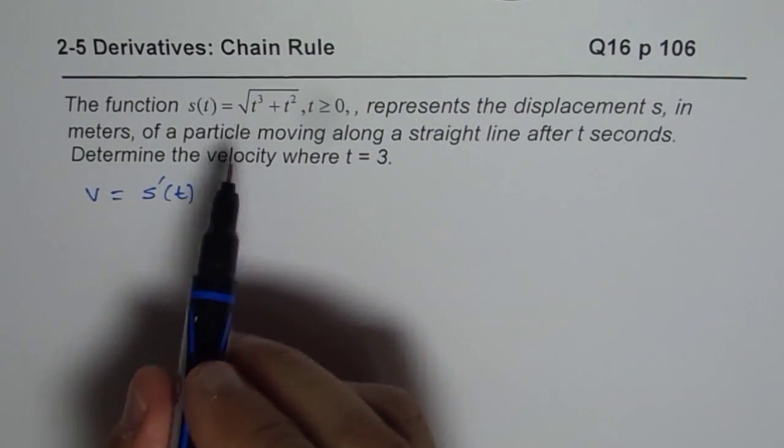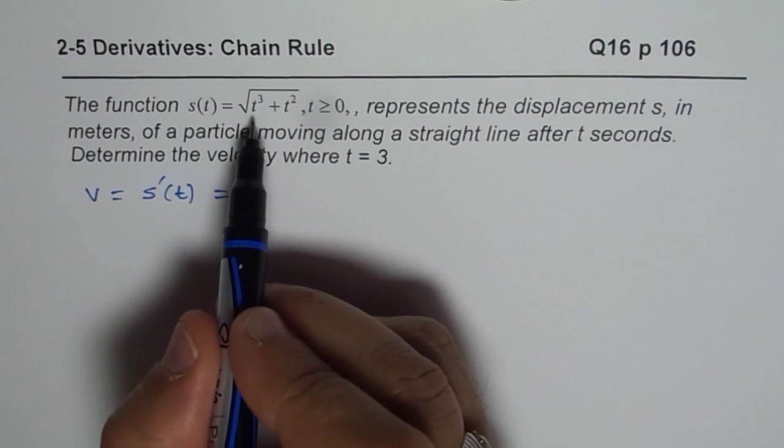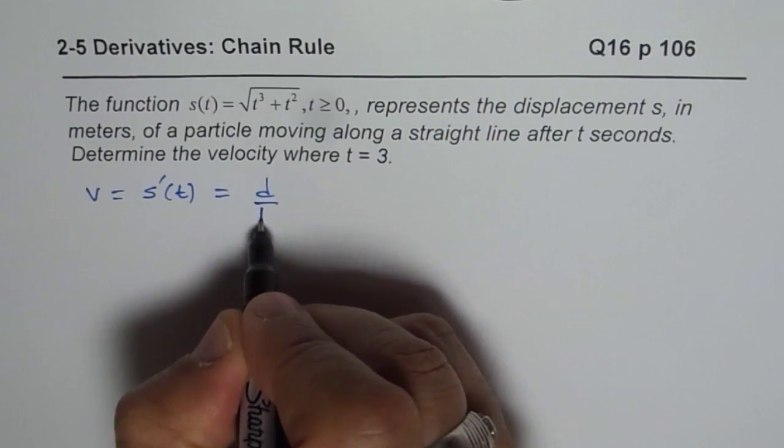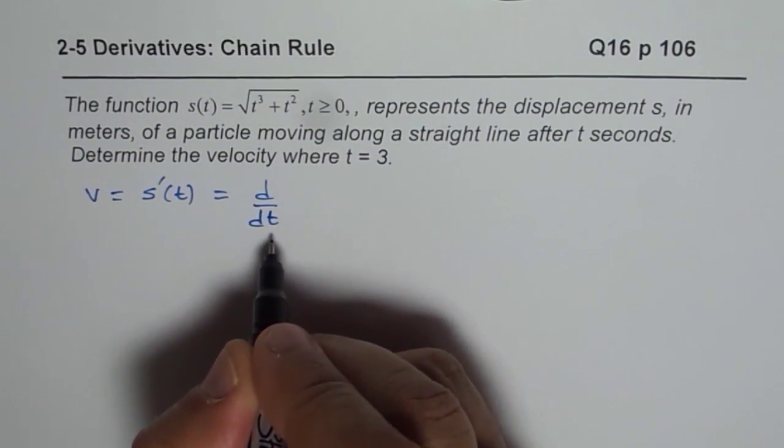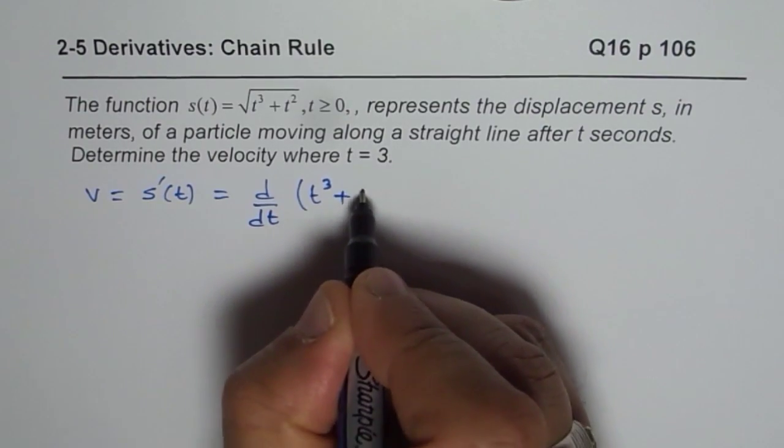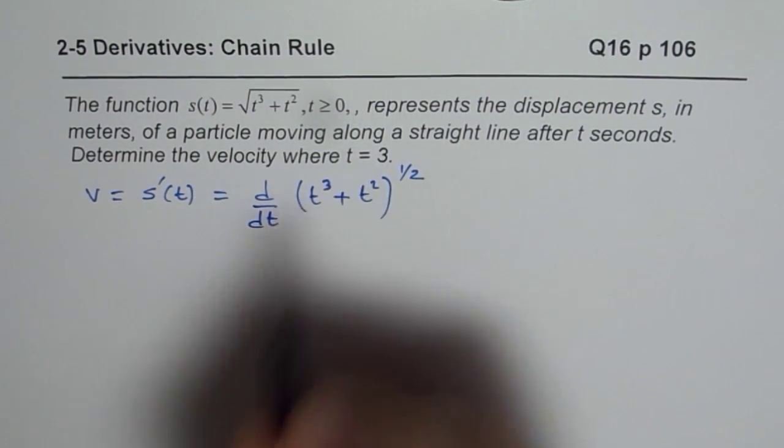We are given s as square root of t cube plus t square, so we need to find derivative of this particular function with respect to t. I will write this as t cube plus t square to the power of half so that we can use the power rule.